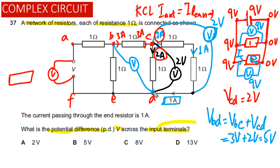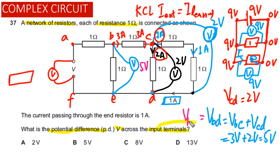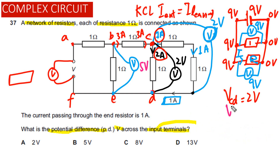If we move the voltmeter from point D to point E, the reading remains 5 volts, because between D and E there is an ideal wire with no voltage drop and no energy loss. So the potential difference across BE is also equal to 5 volts, which means the potential difference across this resistor is 5 volts.